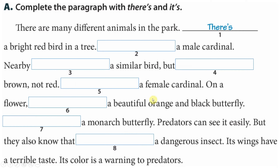A: There are many different animals in the park. There is a bright red bird in a tree — a male cardinal. In order to answer this question and select either 'there is' or 'it's', we need to ask ourselves: is this a new topic, or does it refer to the first sentence? The correct answer is that it refers to the bright red bird, so we use 'it's'.